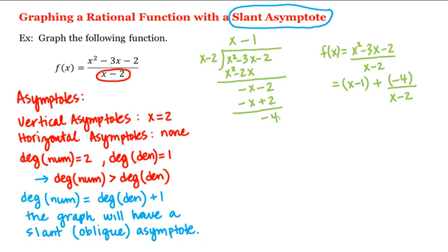By the division algorithm, our function equals the quotient x minus 1, plus the remainder divided by the divisor. As x increases or decreases without bound, the remainder term gets really, really small — in fact, it goes to 0. Therefore our function will start behaving like y equals x minus 1, which is the slant asymptote. So y equals x minus 1 is a slant asymptote of this graph.